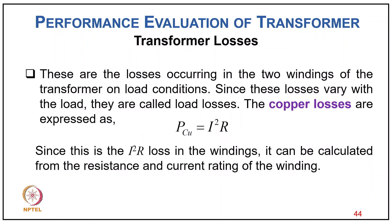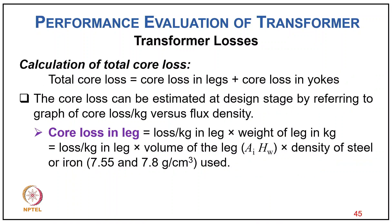Copper losses occurring in the two windings under load conditions vary with load and are called load losses, expressed as PCU = I²R. Calculation of total core loss = core loss in leg + core loss in yoke, estimated at design stage from a graph of core loss per kg versus flux density. Core loss in leg = loss per kg × volume of leg × density of the steel used.